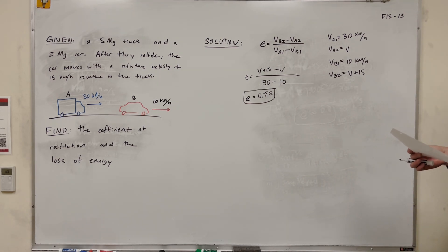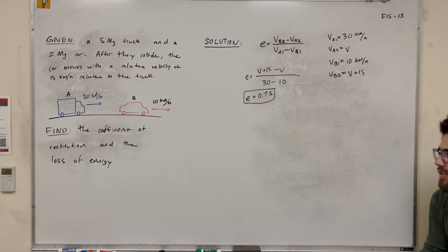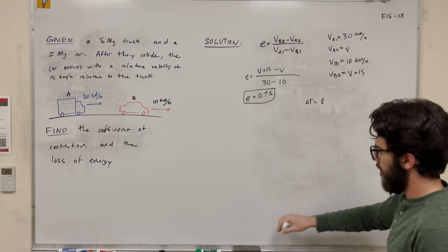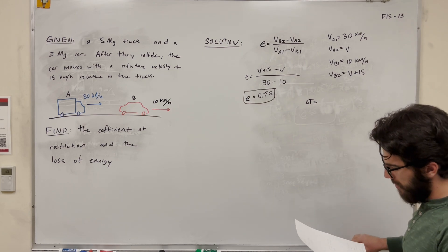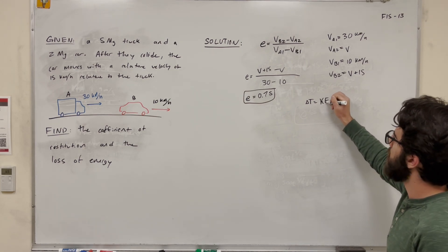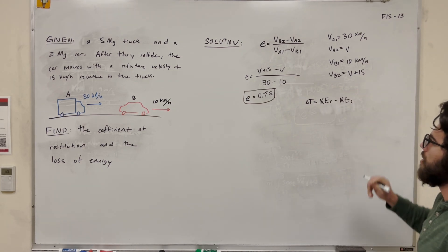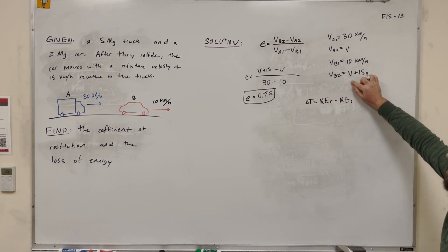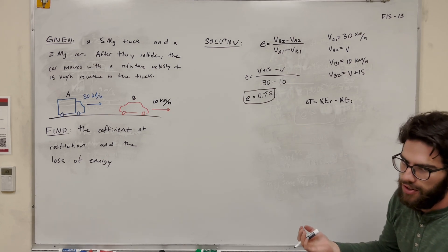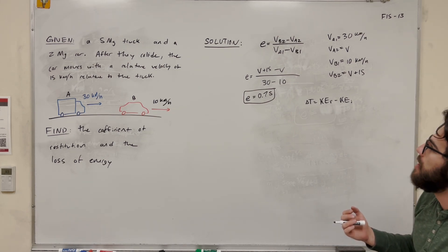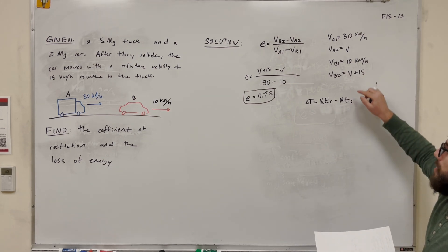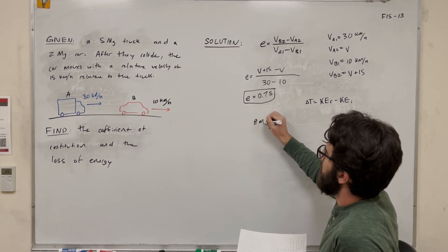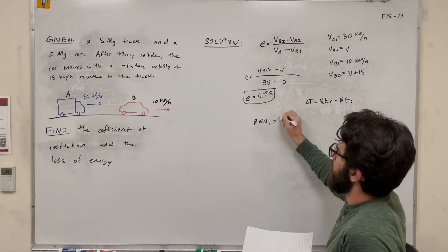Okay, so that's the first part of the question. Now we need to find the loss of energy. The equation for the loss of energy, delta T, is equal to kinetic energy final minus kinetic energy initial. To find kinetic energy we need our velocities, so we need to figure out what our velocity is at each point and convert to meters per second. So let's first find out what B is. To find B, we're going to need to use the momentum equation — the sum of the momentum initially equals the sum of the momentum finally.